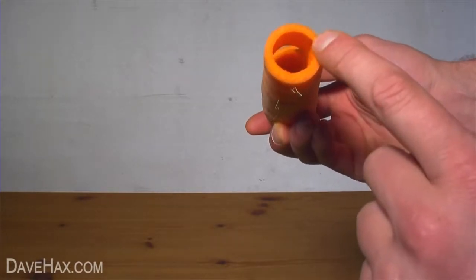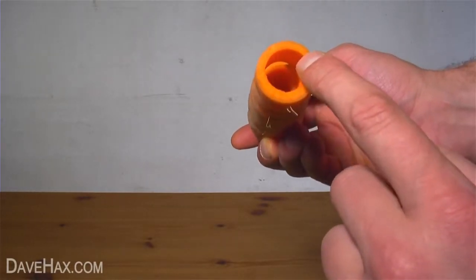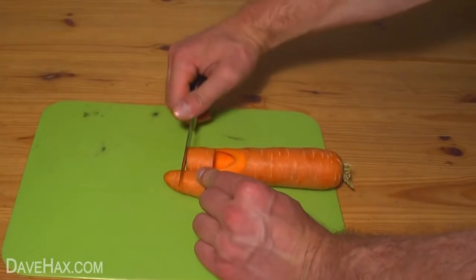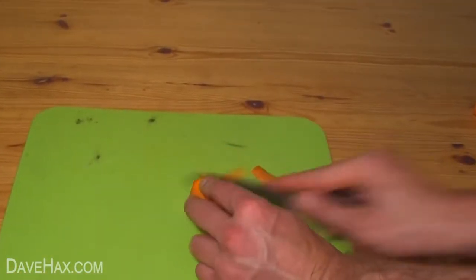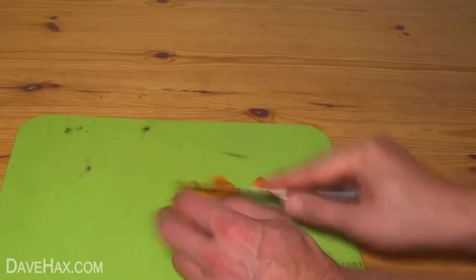Next we need to make a plug to fit inside the bottom part of the mouthpiece, so take the carrot tip we cut off earlier, cut off the very end and using your knife carefully slice off bits until it makes a good tight plug into the mouthpiece.